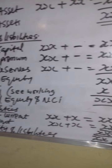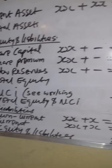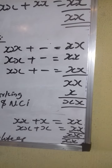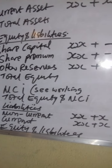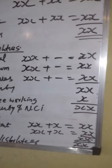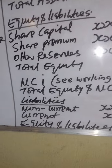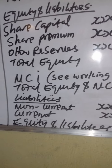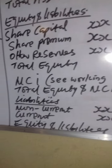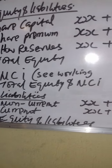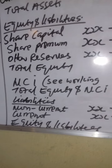Share capital is the share capital of the parent only - there is no addition. Share premium is also the share premium of the parent, and all reserves are of the parent. Then we have total equity. NCI will be the value calculated in format 4. Then we have liabilities: non-current liabilities where there are no adjustments are added together. Same thing with current liabilities where there are no adjustments - they are added. You then arrive at your total equity and liabilities.